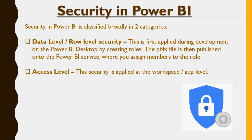And then there is the access level security — that means the security of the workspace, the application, and the security around the reports. Which report would be seen by whom, who is classified as an admin versus who is classified as a member on the app. That is the access level security, which is the second type or second category of security in Power BI.